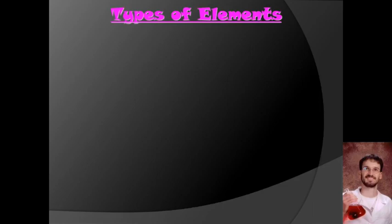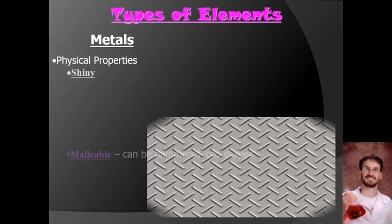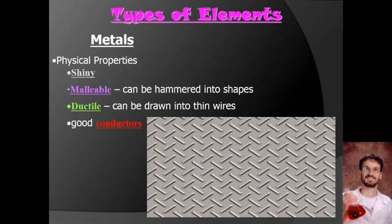Most elements are metals, and that makes them shiny, malleable — meaning you can hammer them into shapes and fold them without breaking — and ductile, meaning you can draw them into long thin wires. They're also very good conductors. All of these properties come from metallic bonds — a third kind of bond besides covalent and ionic bonds. Because of how electrons are shared in metallic bonds, you get all of these properties.